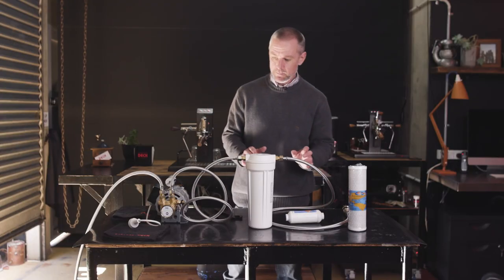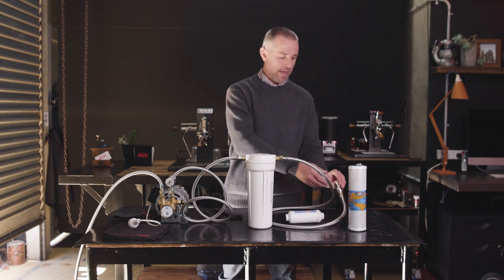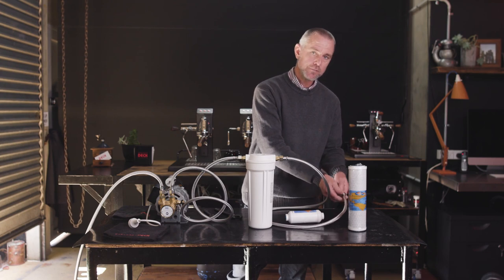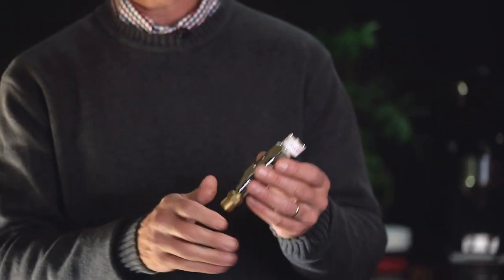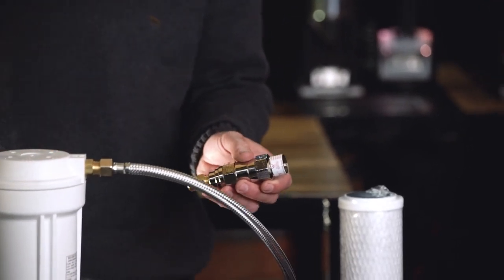Now it needs to be done in the correct order. Basically, we've got a tap on the wall where we want to connect a pressure limiting valve to.